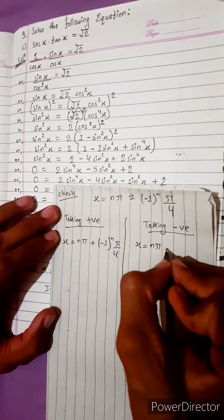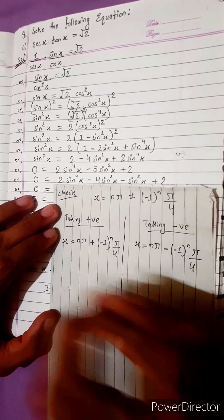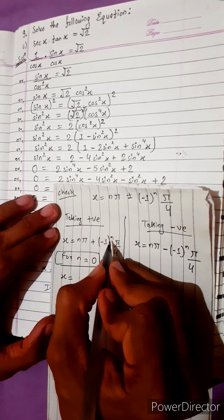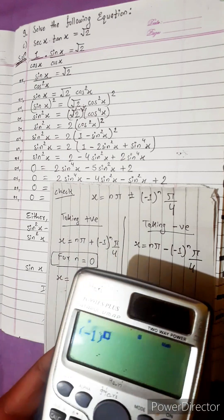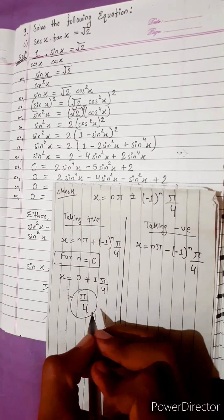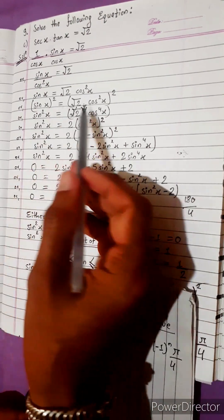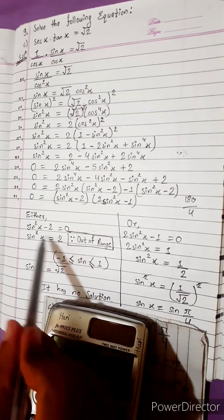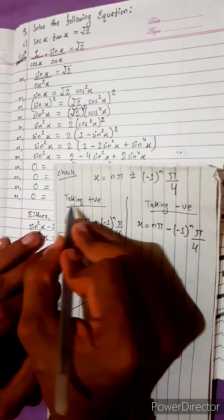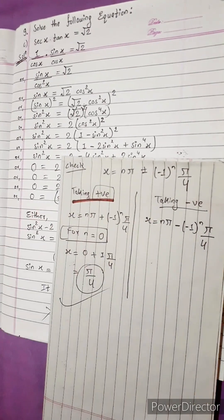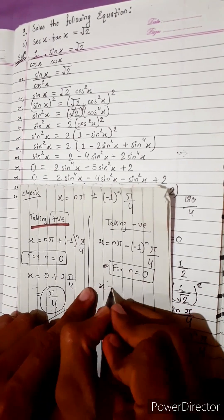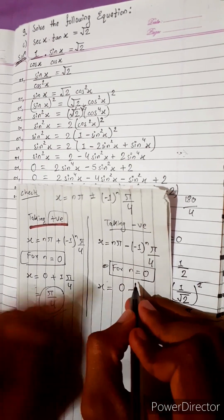From here we get two values: taking positive and taking negative. For n equals zero, taking positive: x equals zero plus minus one power zero times pi by 4. Minus one power zero is one, so x equals pi by 4. Putting pi by 4 in the equation — two sine squared 45 minus one gives zero. Yes, positive value satisfies.